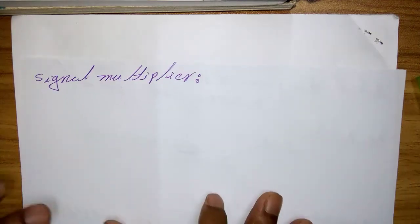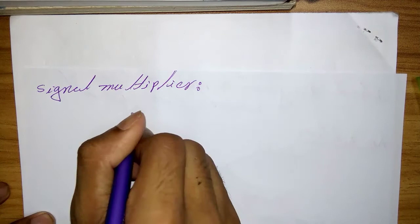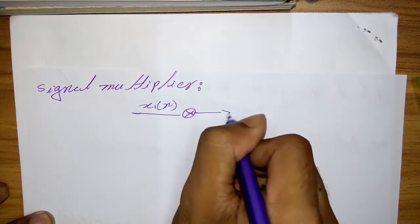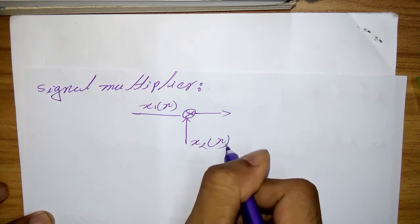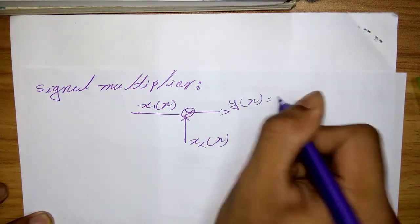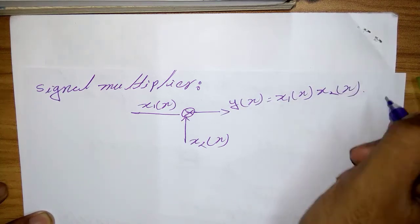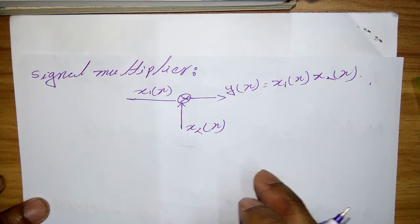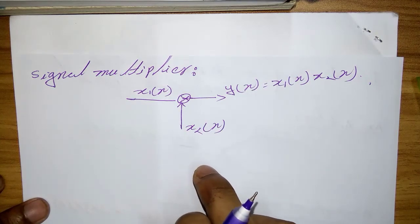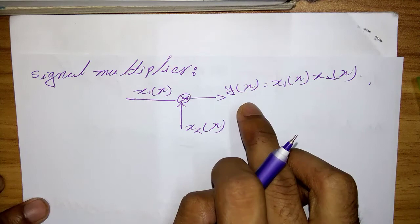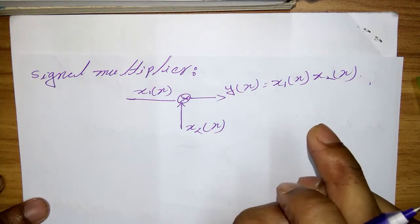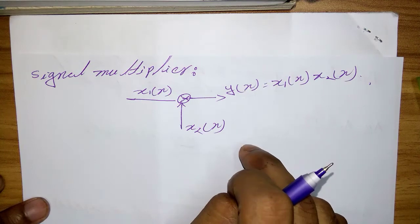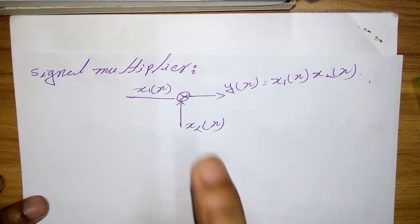In this figure, the multiplication of two signal sequences forms another product sequence denoted as y(n). As in the preceding two cases, we can view the multiplication operation as memoryless. Here is the graphical representation of the signal multiplier. Next one is a unit delay element.